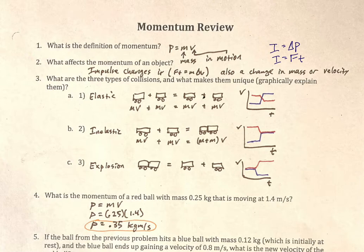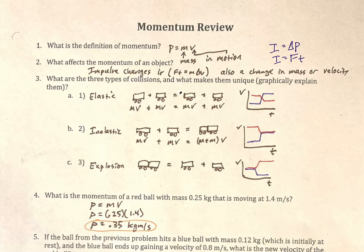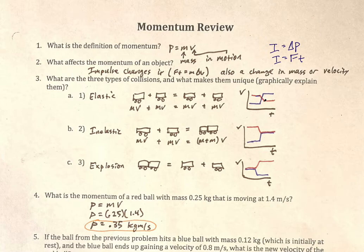If we look at this from a graphical perspective, we'd have one object going at its own velocity and another object going at its own velocity. There's a collision represented by an equal sign. On the graph, a flat line means velocity is staying constant — nothing has changed yet. Once the line starts to decrease, a collision has occurred, and collisions aren't instant — the x-pattern shows how long the collision takes.